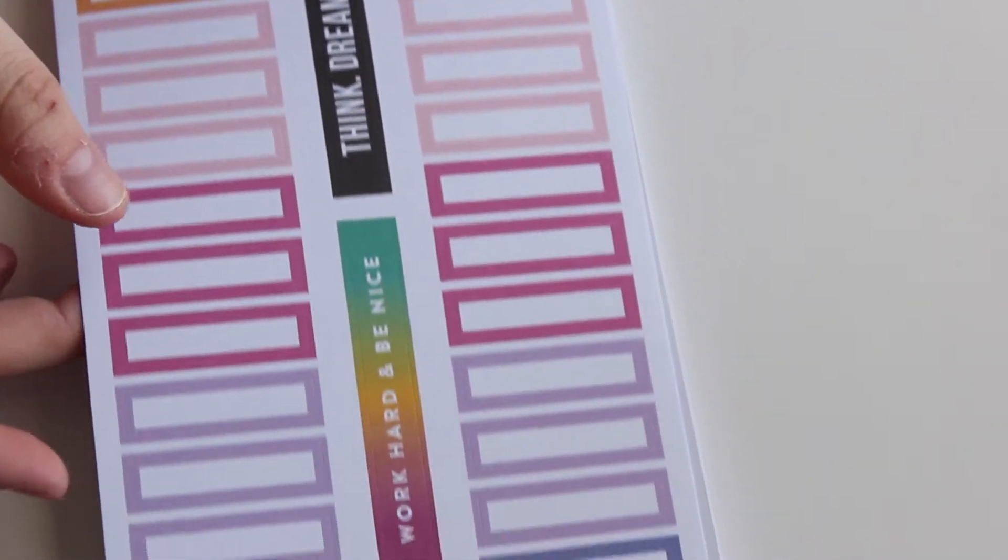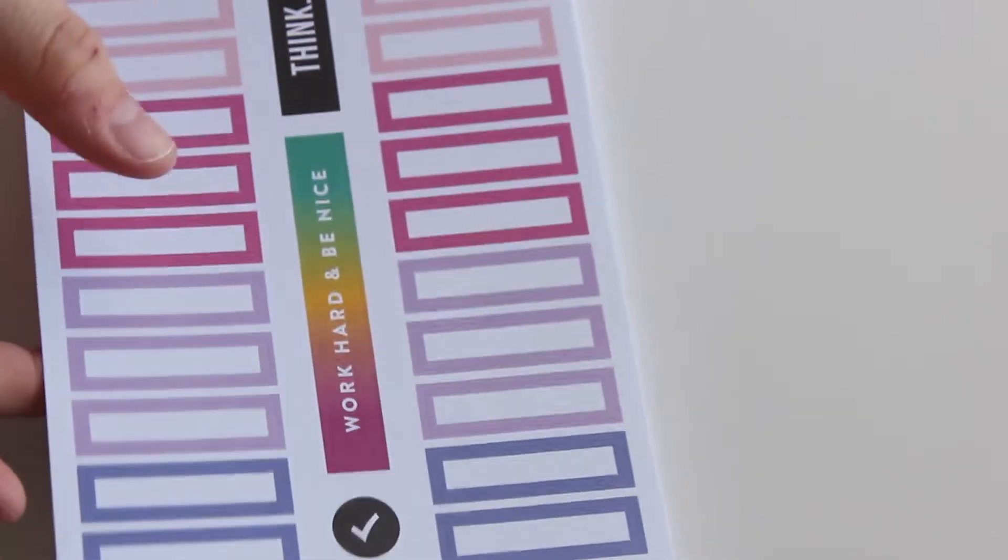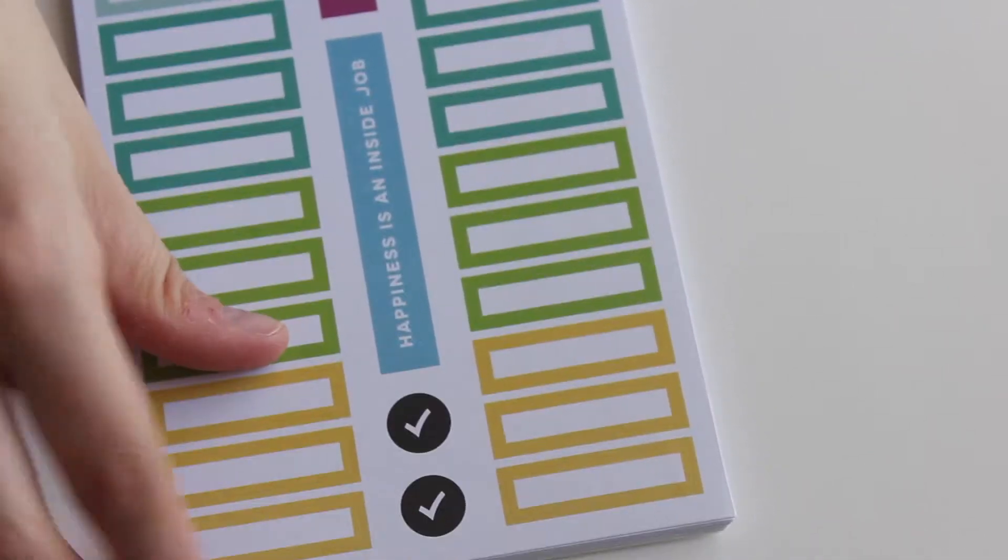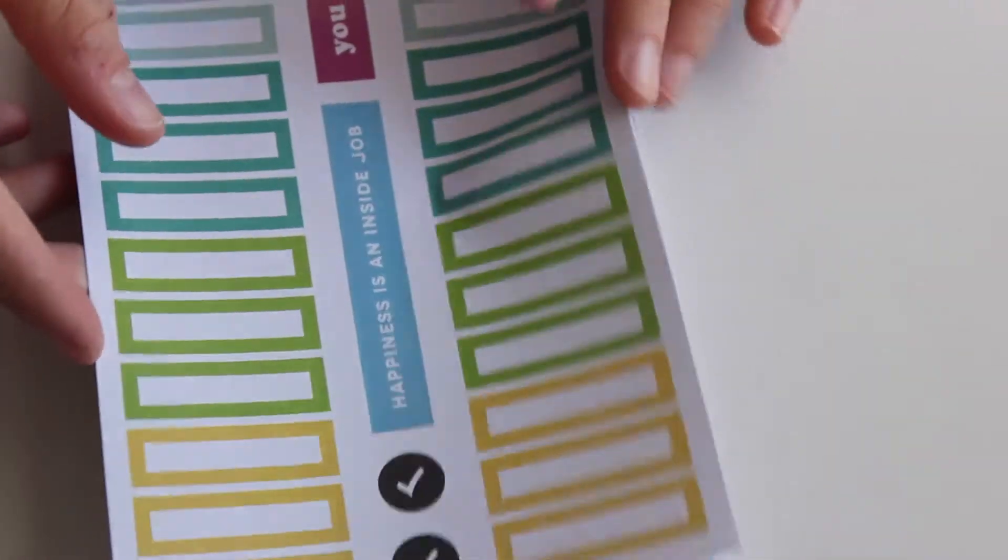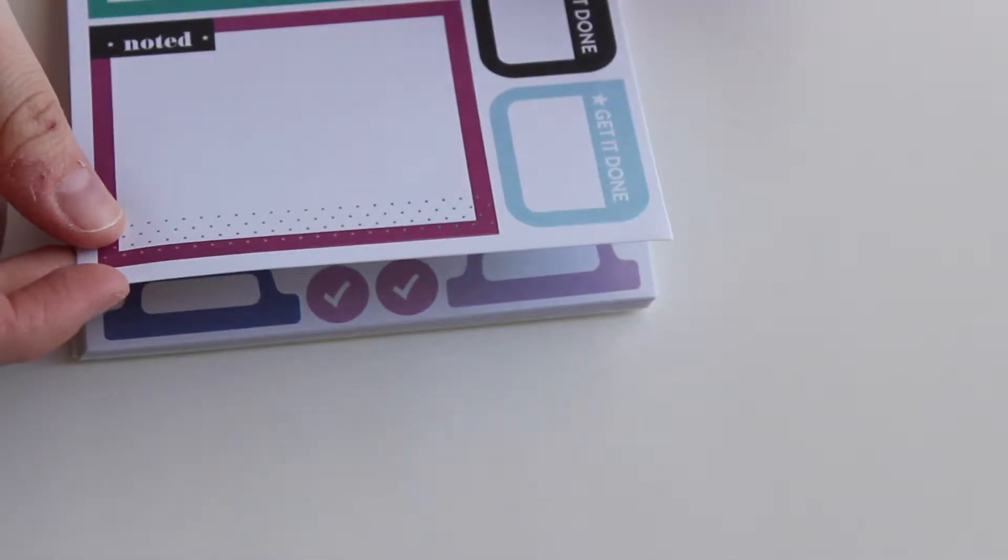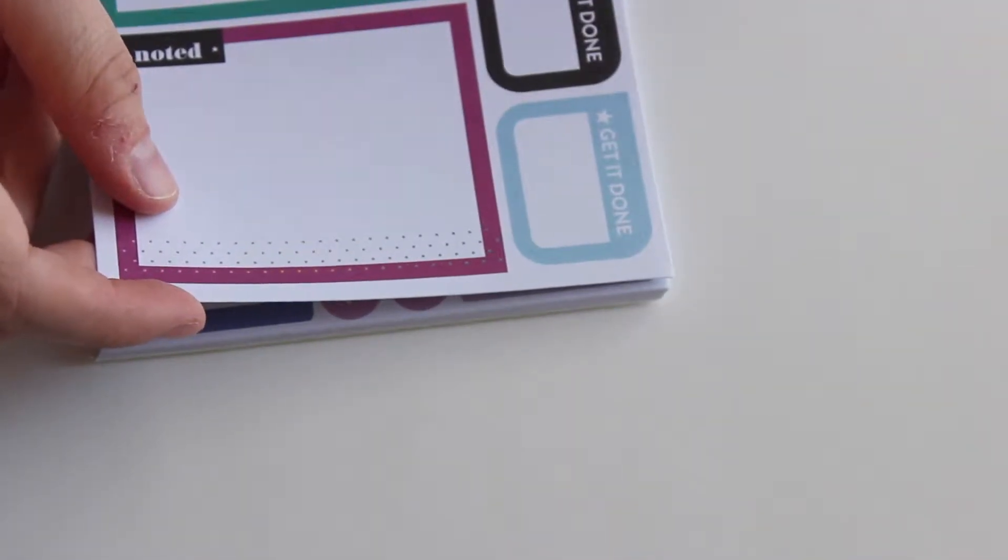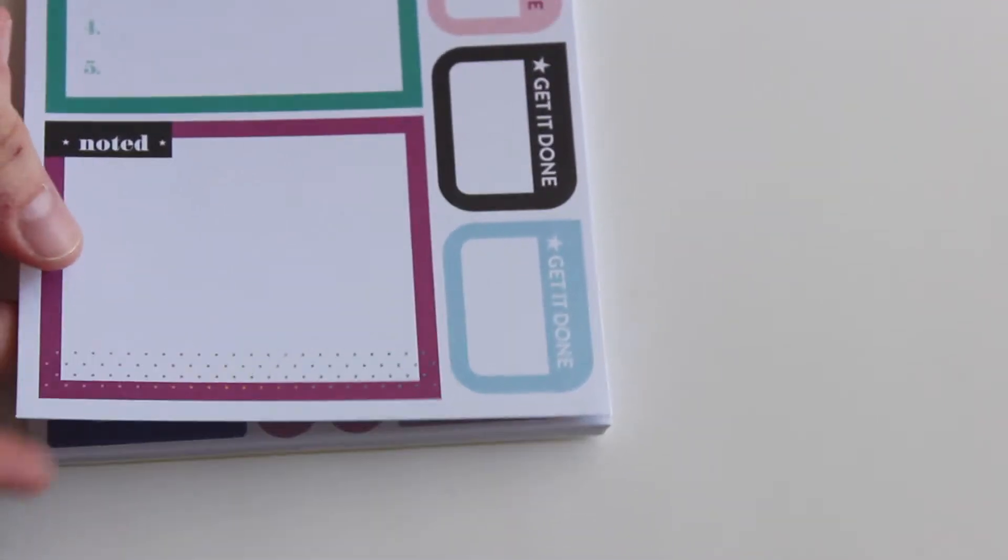And then more little colorful boxes. And same for this one, it's more earthy tones versus the pink. And this one has the big boxes and the get it done boxes. These remind me of the what's for dinner stickers in the mom book.